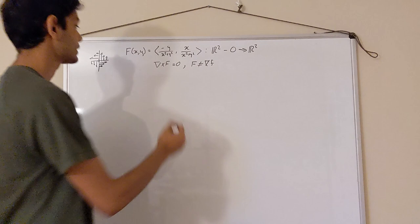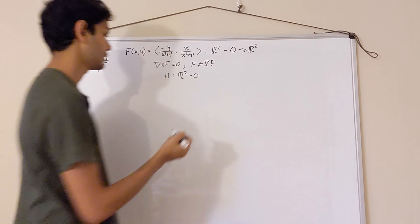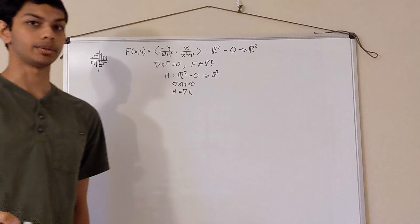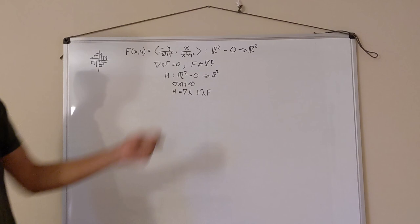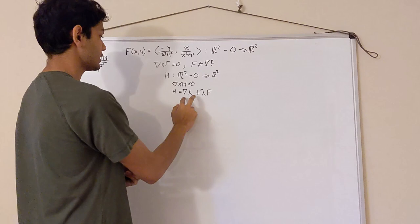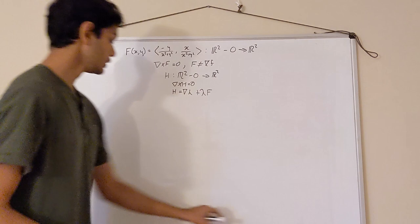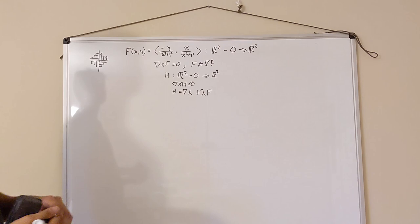We saw that this vector field F has a very special role: if we have another vector field H defined on R² minus the origin with curl H = 0, then H is almost equal to the gradient of some primitive function h, but we need a correcting factor — F times some constant λ. This expression is well understood because we can study the first part via the single function h and the second part via our explicit formula for F.